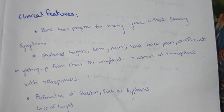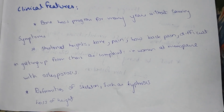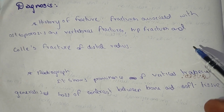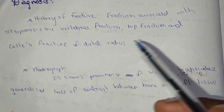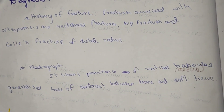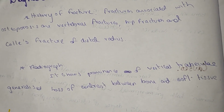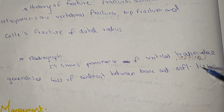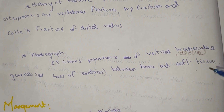These are the clinical features. For diagnosis, there is a history of fracture associated with osteoporosis — vertebral fracture, hip fracture, and Colles' fracture of the distal radius — due to decreased bone density and volume. Radiograph shows prominence of vertical trabeculae and generalized loss of contrast between bone and soft tissue.